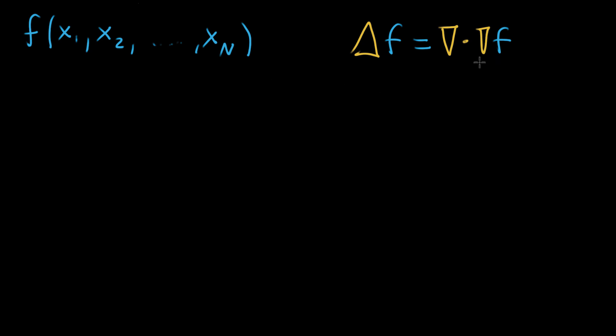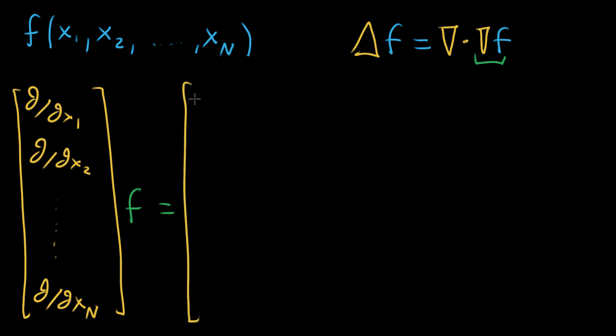And what I want to show you here is another formula that you might commonly see for this Laplacian. So first, let's abstractly write out what the gradient of f will look like. We start by taking this del operator, which is going to be a vector full of partial differential operators: partial with respect to x1, partial with respect to x2, and on and on, up to partial with respect to that last input variable. You take that whole thing and then just imagine multiplying it by your function.